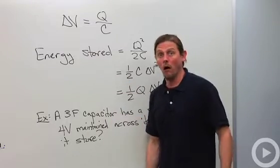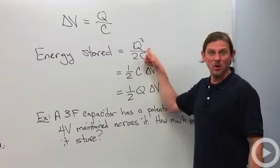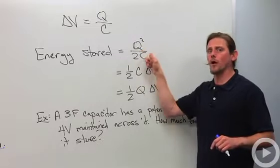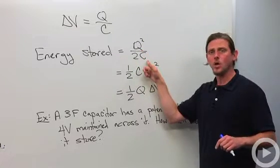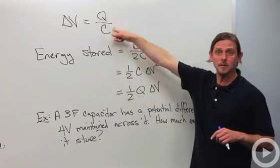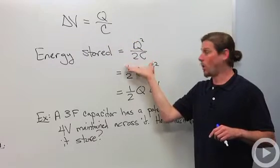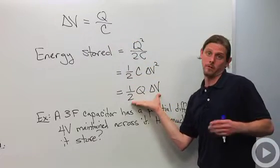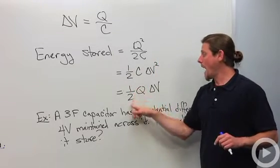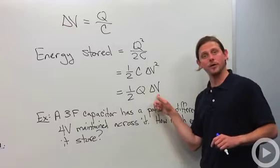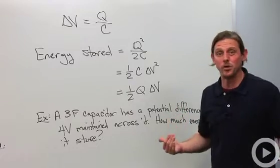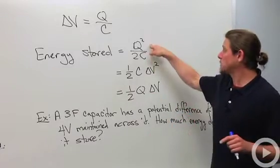The purpose of the capacitor is to store energy as well as charge, so how much energy is stored? The energy is Q² over 2C — the square of the charge divided by twice the capacitance. Using the relation ΔV = Q/C, we can rewrite this in three equivalent ways: Q²/2C, one-half C·ΔV², and one-half Q·ΔV. All three formulas say the same thing; depending on what information you have, you'd choose the most convenient form.